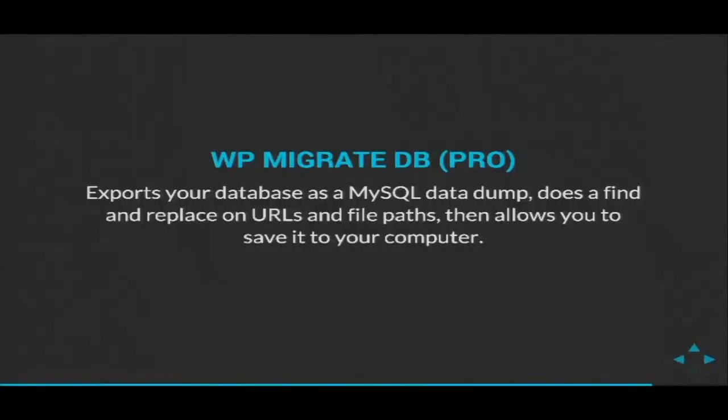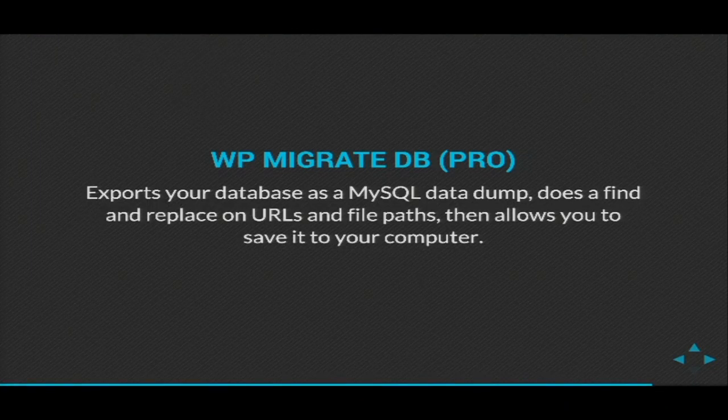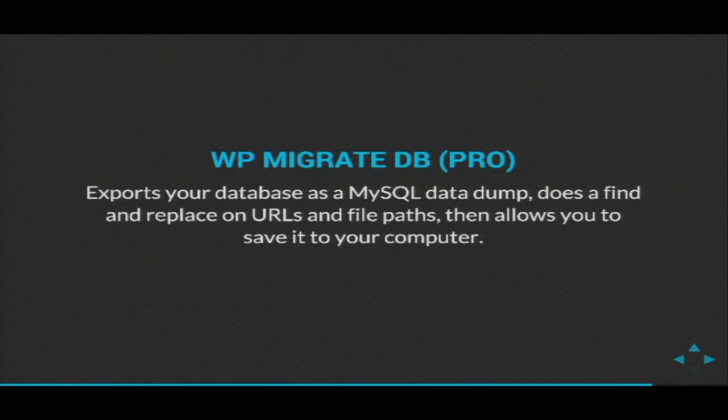The last plugin I cannot live without is WP Migrate DB. When you're going from a development environment to staging to production, it lets you dump your database — including renaming the URLs and directory paths so it automatically applies to the next environment. If you get the pro version, your different environments will actually talk to each other and make the transfer automatically, so you don't even have to deal with database dump files and reimporting. It just handles it all.